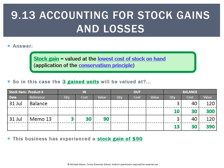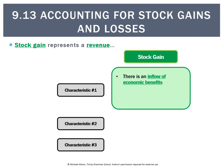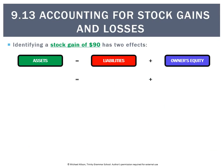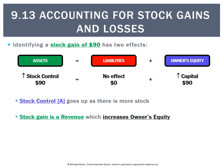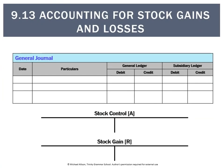We have a stock gain of $90. This is going to be a revenue. Relating that to the characteristics: a stock gain is revenue because there's been an inflow of economic benefits — we've gained stock. There's going to be an increase in assets, specifically the stock control asset, and overall there'll be an increase in owner's equity. Looking at the accounting equation: stock control goes up $90, no impact on liabilities, and owner's equity goes up $90 because revenue has increased. That gets recorded in the general journal — debit to stock control because we have more of it, and credit to stock gain because it's a revenue.